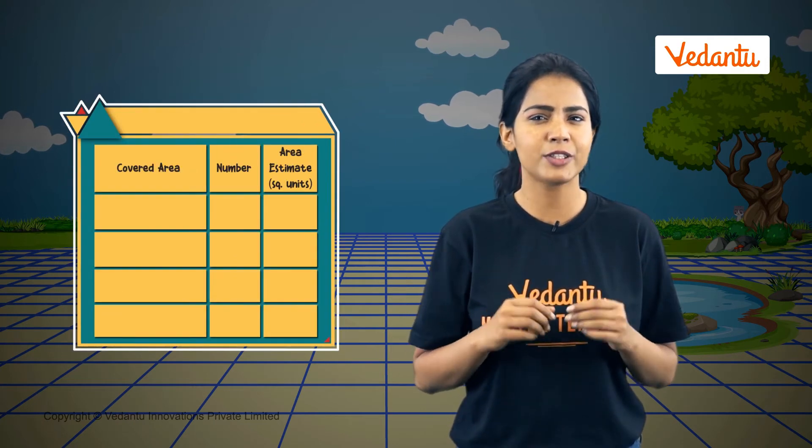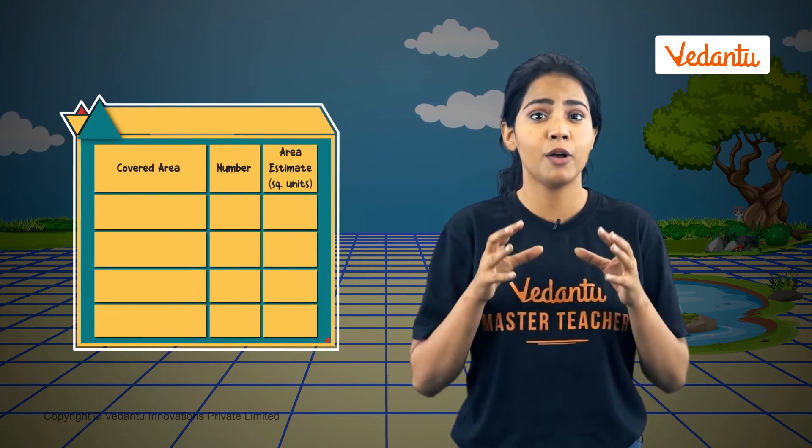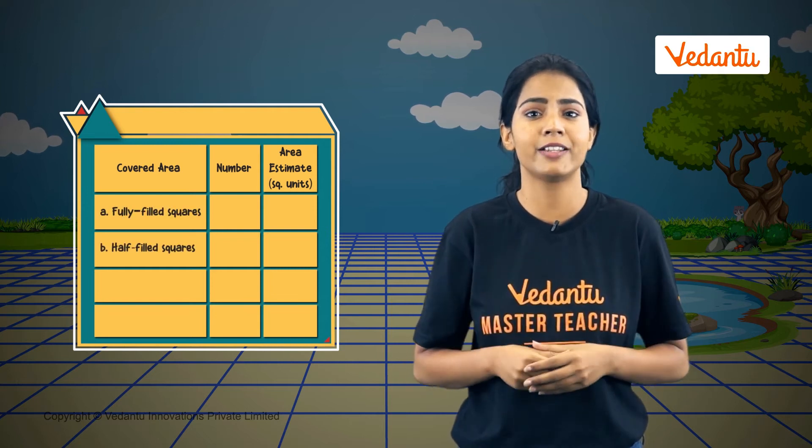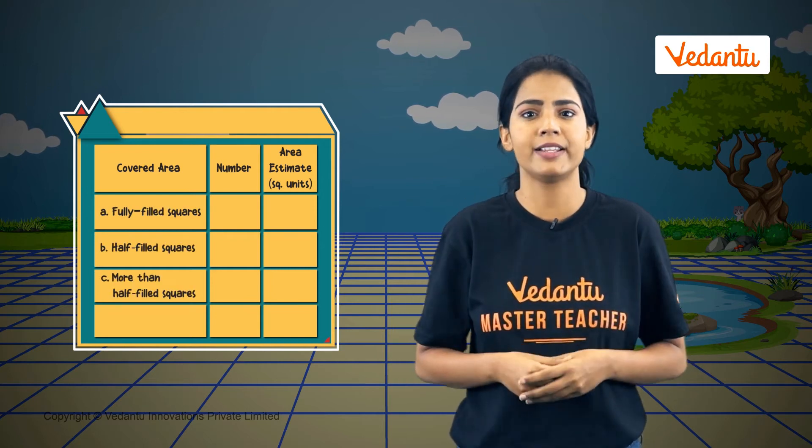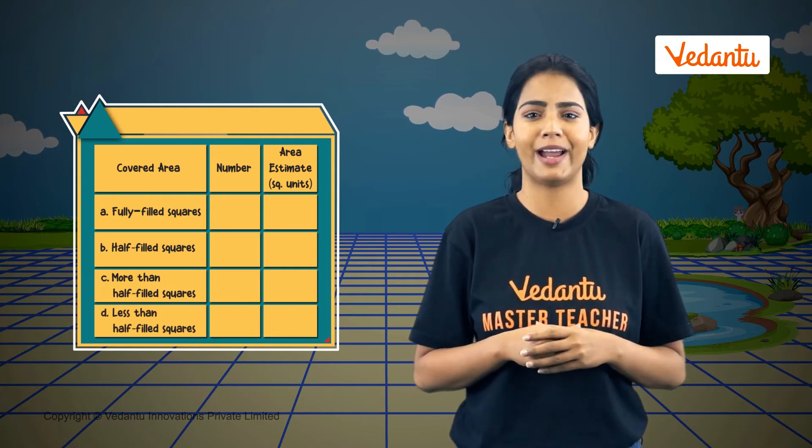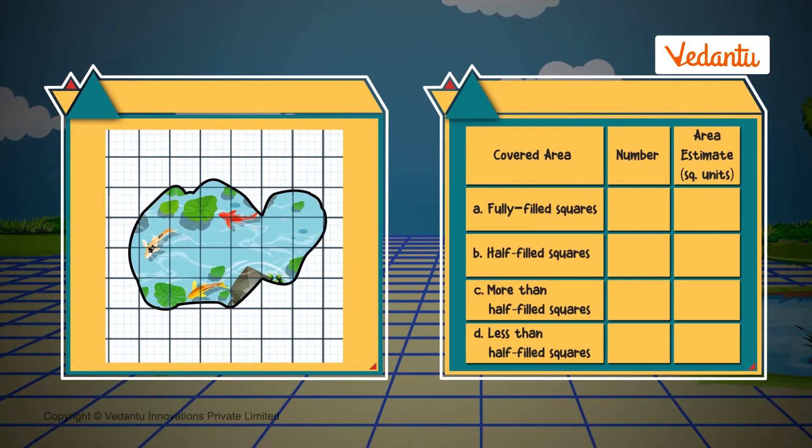It's a pond. Fishes are jumping and swimming. What is the area of this lake? It's trickier than before since the lake is not made up of complete squares. We can count the boxes, but first we need to categorize them as fully filled squares, half filled squares, more than half filled squares, and less than half filled squares. Now let's count.